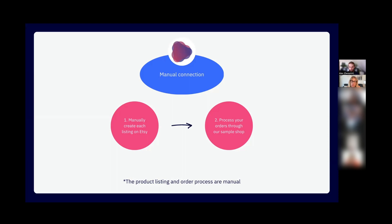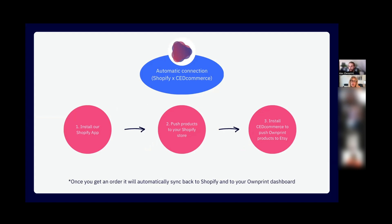I don't want you to spend on ads on Etsy until you get a sale. I understand some of you are in tight financial situations, and I get why you'd want to do it manually. But if you're really serious about this, Shopify plus CED Commerce is a business expense that will pay you back much more. I have a link for Shopify where it's a dollar for the first three months — I'll send it to you guys. Also, because Outprint is harder to set up, there's actually less competition on Etsy. Putting in that extra step is actually what will help you get more sales.